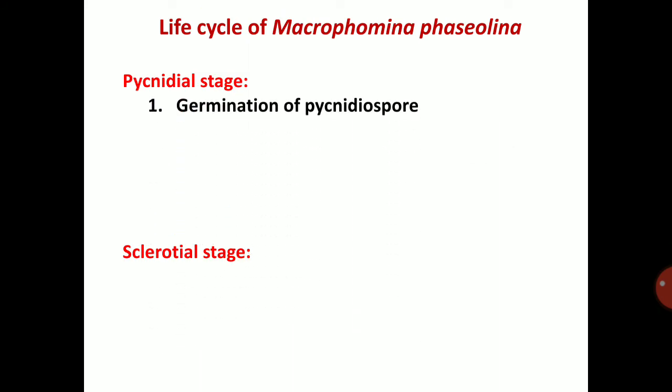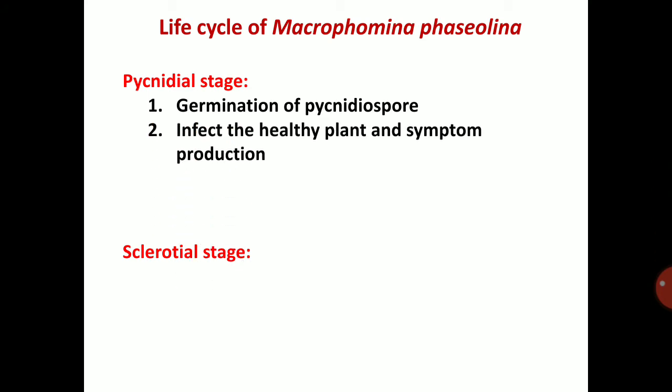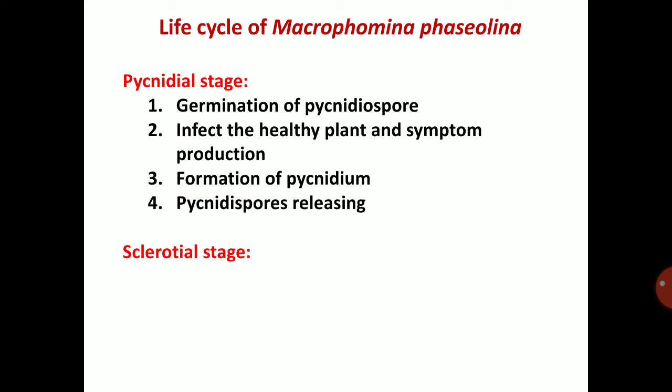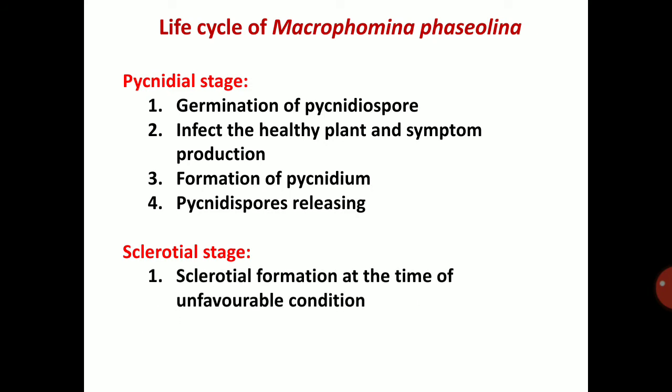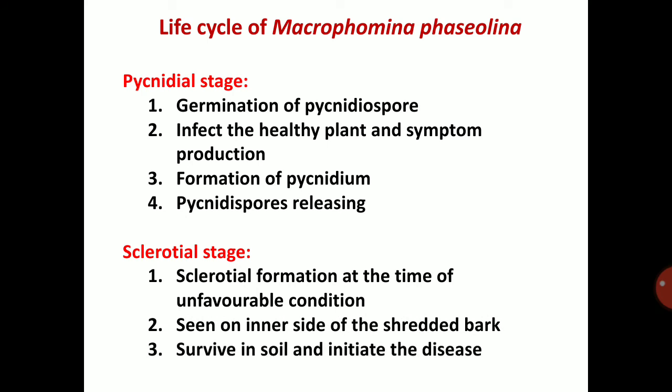The pycnidial stage life cycle is as follows: germination of pycnidiospores, infection of the healthy plant, symptom production, formation of pycnidium, and pycnidiospore release through the ostiole. In the sclerotial stage, sclerotia form under unfavorable conditions, are seen on the inner side of the shredded bark, survive in the soil, and initiate the disease in the next season.